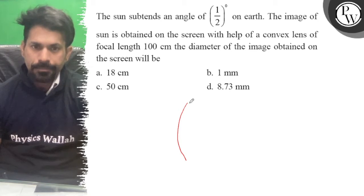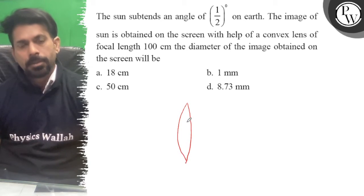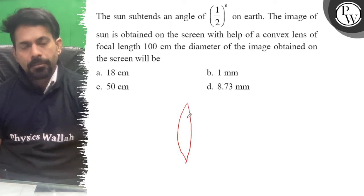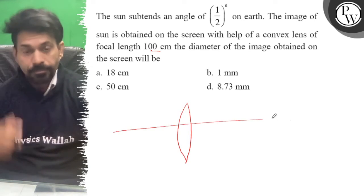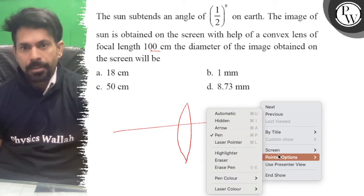So the convex lens is 100 centimeters. The object is at infinity.